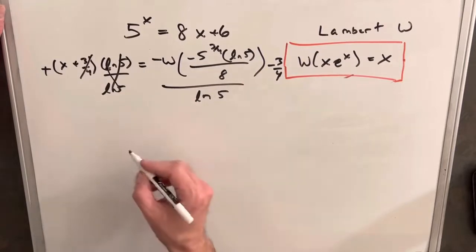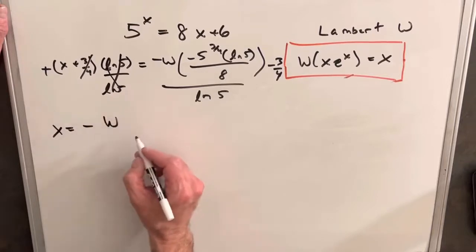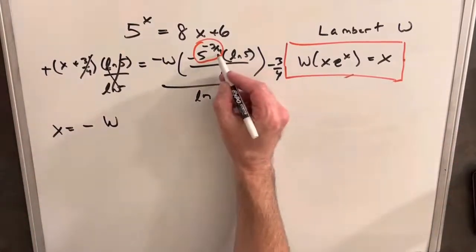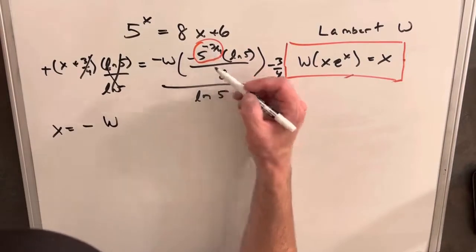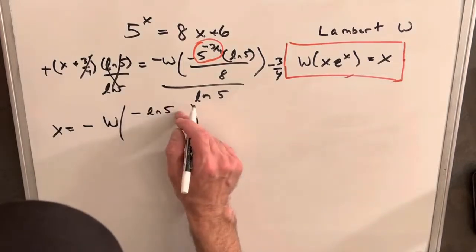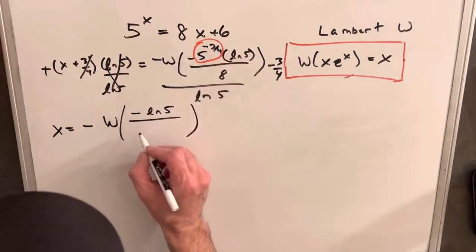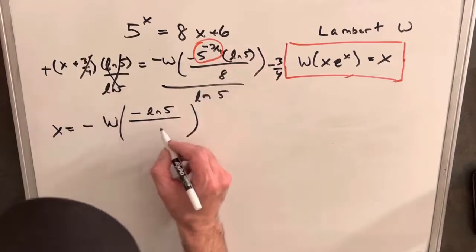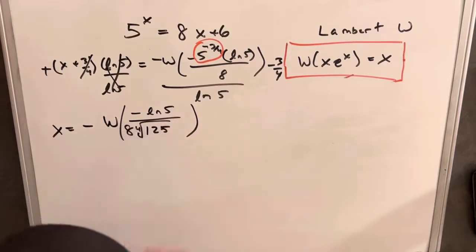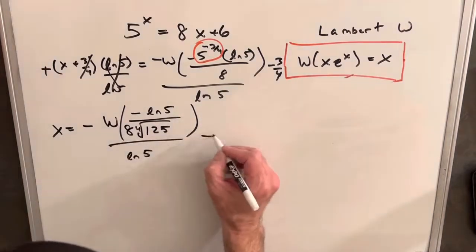But now we get kind of a messy expression here, so let's try to do a little better with this. So we're going to have x equals minus the Lambert W. Let's do something with this 5 to the minus 3 quarters. So we can actually rewrite that. As we're dividing by 4, we can write that as a 4th root. And because it's negative, we can bring that into the denominator. So let's write, we'll have a minus ln 5 in the numerator. And then we'll bring our 5 to the minus 3 quarters into the denominator, but we'll write it as a 4th root, but 5 cubed is 125. So we can write this as 125, the 4th root of 125 times 8. And then this thing's all over ln 5 minus 3 quarters.